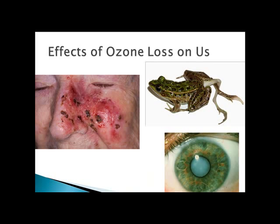Ozone loss results in higher rates of skin cancer, cataracts, and retinal cancers, as well as the loss of many species. A recent study of more than 6,000 species of amphibians worldwide concluded that 32% were threatened and 43% were declining in population.